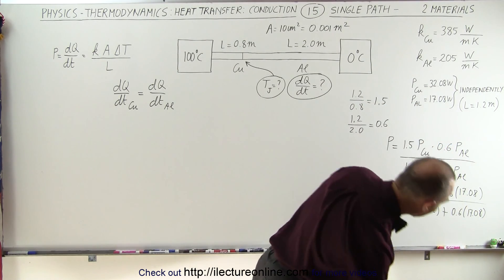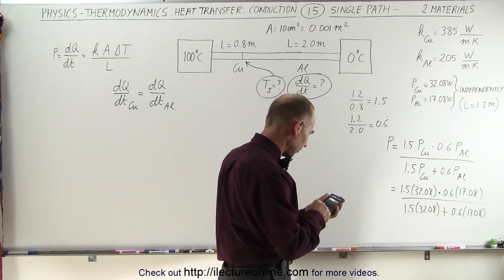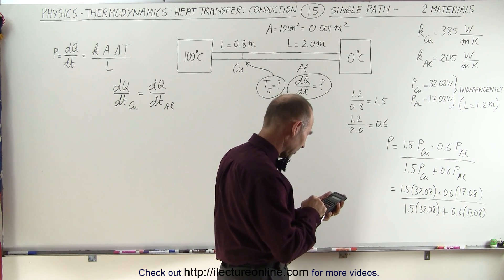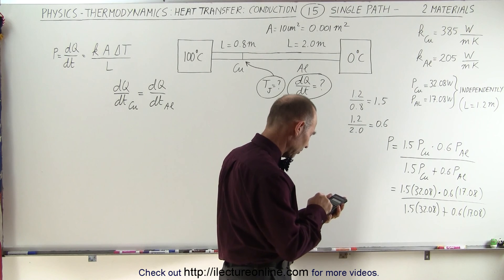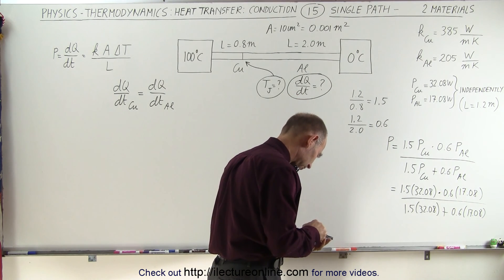All right, let's go ahead and calculate that now. So 1.5 times 32.08 plus 0.6 times 17.08 equals, that's in the numerator, now we convert it to the numerator.